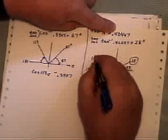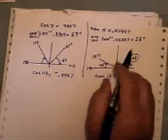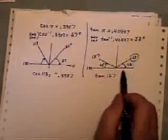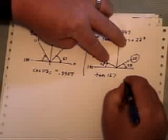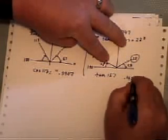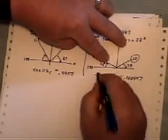Let's see what happens when I take the tan of 157. Do I get 42447? Tan of 157. I do get 0.42447, but it is negative, not positive.